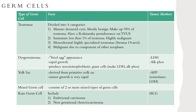Germ cells are the second group. They can make up anywhere from 15 to 25 percent of all ovarian neoplasms, but only 5 percent of malignant ovarian neoplasms. Germ cell tumors are most common in young women aged 10 to 30. Among malignant ovarian germ cell tumors, the most common types are dysgerminomas, immature teratomas, and yolk sac tumors, along with mixed types — accounting for 90 percent of malignant germ cell tumors.